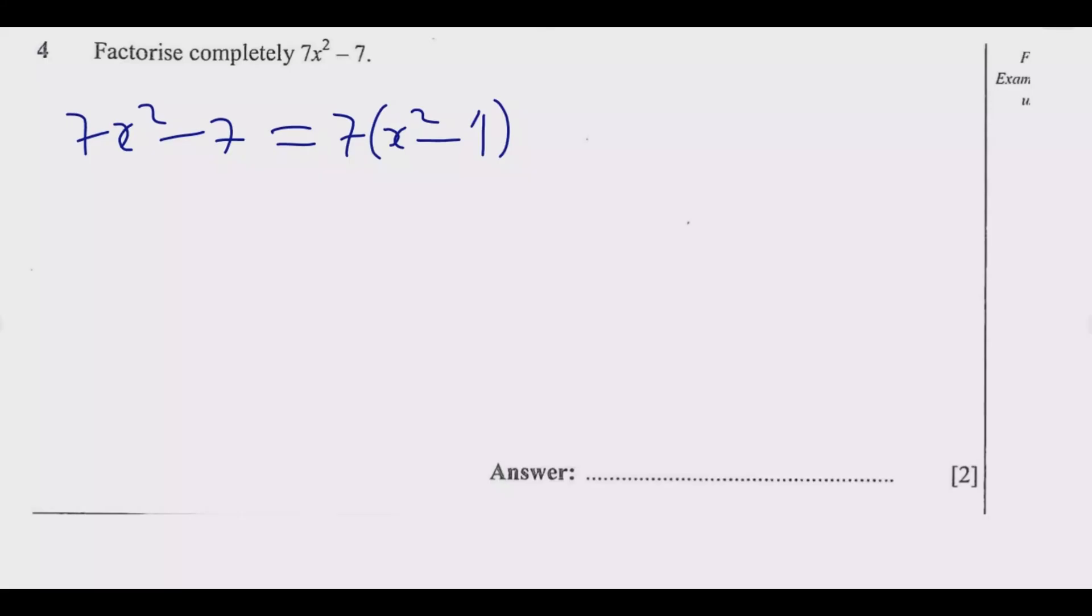A lot of people would end there and they get nothing, because this is not factorized. So we need now to factorize what is in the bracket. We have 7 outside, so now let me deal with what is inside, which is x² - 1.